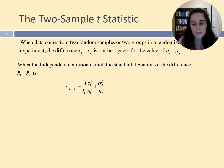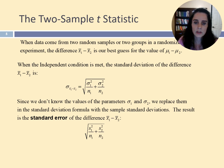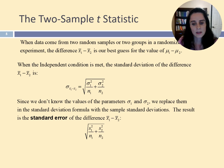However, most of the time we don't know the population standard deviation, so we will use the t-procedures to make inferences. In this case, we estimate the standard error of the difference using the standard deviations of the samples. The standard error of the mean difference between the two groups can be obtained by simply replacing sigma with s in the formula. For each sample, we divide the square of the standard deviation of the sample by the sample size, add the result of the two divisions, and then take the square root of the sum.